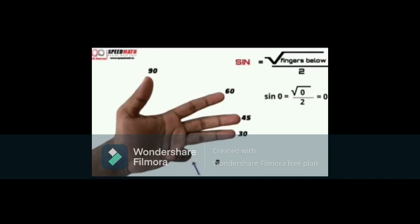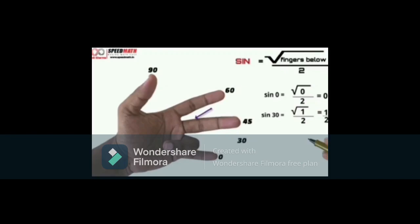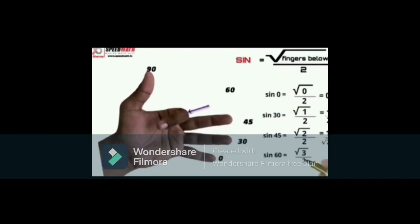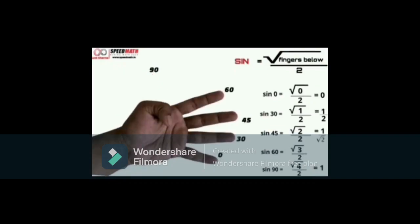Let's see how we can find out the value of sine 0. For that, count the number of fingers below the little finger. Below little finger, we don't have any fingers. So, by the formula, the value of sine 0 is root 0 by 2, that is 0. Now, let's find out the value of sine 30. The number of fingers below the ring finger is 1. So, by the formula, the value of sine 30 is root 1 by 2, that is 1 by 2. Now, let's find out the value of sine 45. The number of fingers below the middle finger is 2. So, by the formula, the value of sine 45 is root 2 by 2, by rationalizing we get 1 by root 2. Now, let's find out the value of sine 60. The number of fingers below the index finger is 3. So, by the formula, the value of sine 60 is root 3 by 2. Now, let's find out the value of sine 90. The number of fingers below the thumb is 4. So, by the formula, the value of sine 90 is root 4 by 2, that is 1.